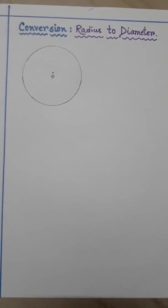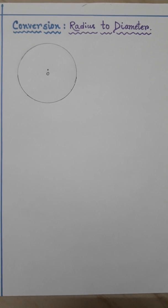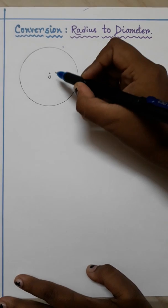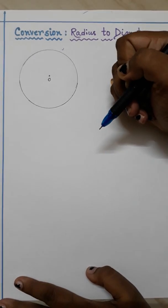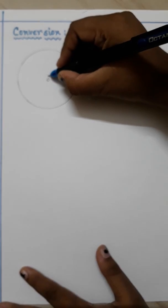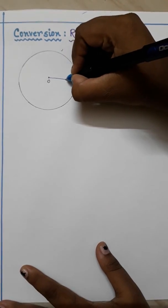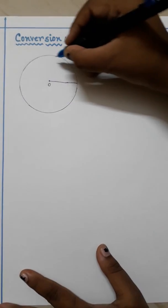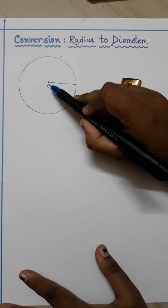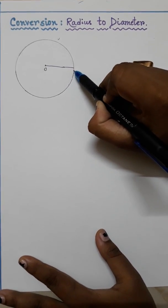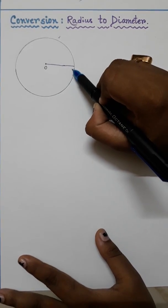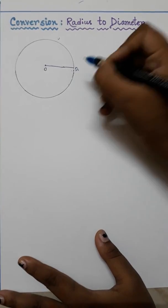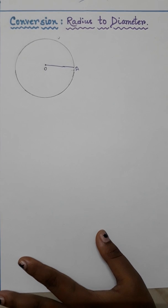So first let's start with the conversion from radius to diameter. As you can see here I have drawn a circle. As you know, this one is the center of the circle. Now if I draw a straight line from the center to the boundary of the circle, this line will be the radius of the circle. So let us give it a name A — OA is a radius of the circle.